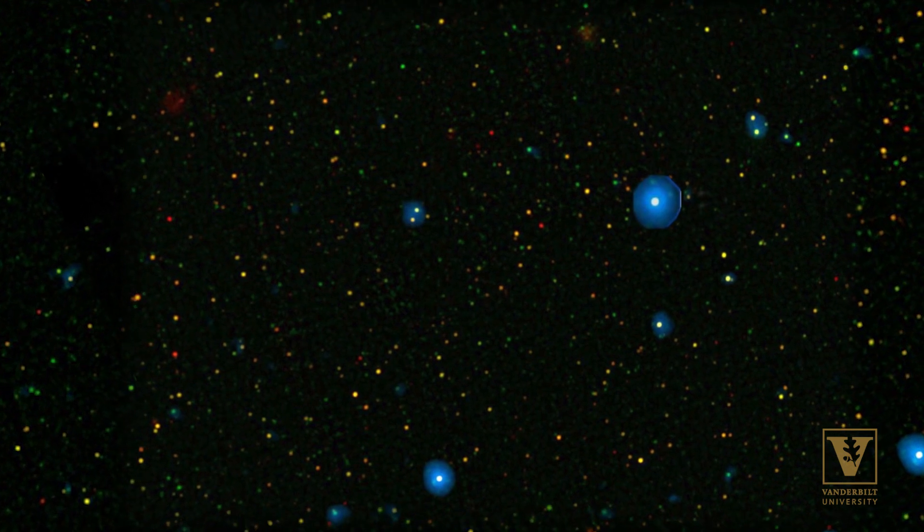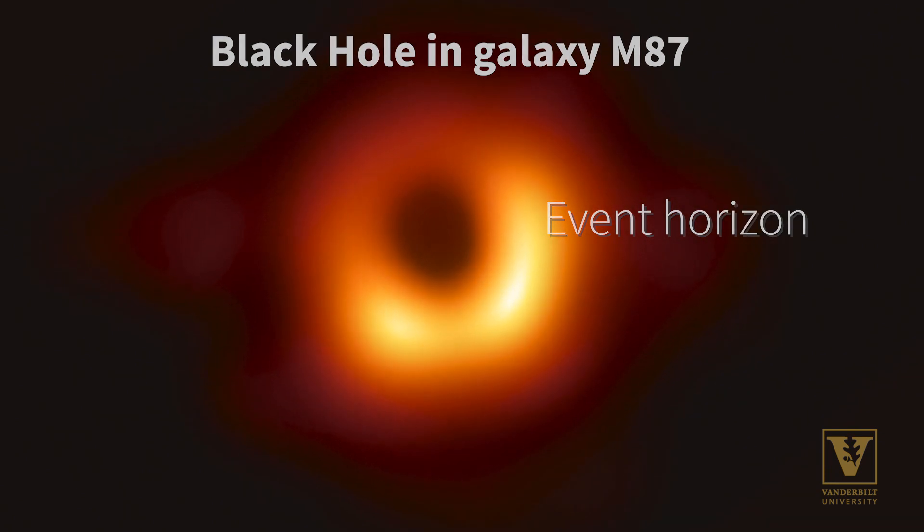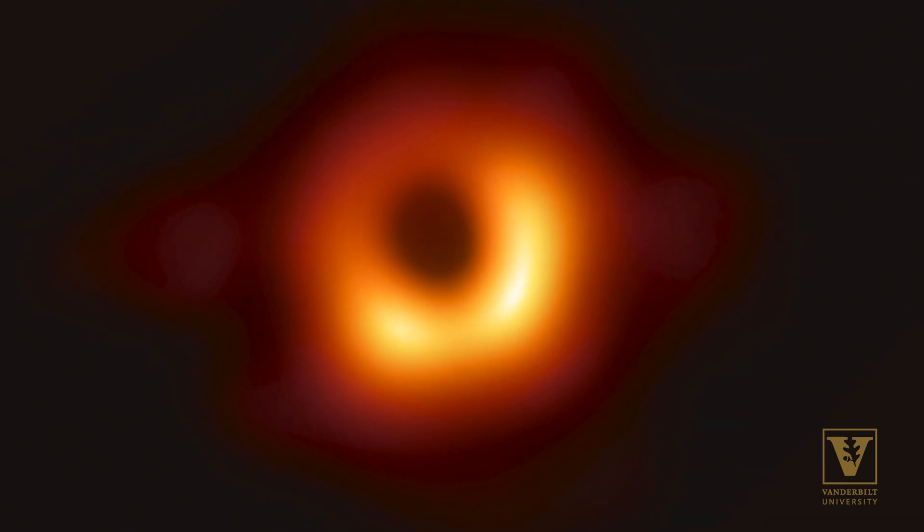We know that there are these objects like black holes inside which all known understanding of the universe simply breaks down. There is a boundary around the black hole which we call the event horizon, after which even light cannot escape.